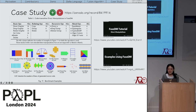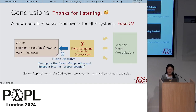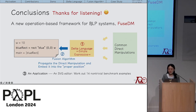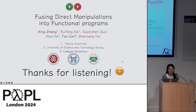To demonstrate effectiveness, 14 benchmark examples from Sketch & Sketch are implemented using the tool. A tutorial video and a detailed walkthrough of all 14 benchmarks are available in the artifact package. In summary, the three contributions are: a simple but expressive delta language, a fusion algorithm propagating direct manipulations to proper positions, and a prototype application with 14 non-trivial benchmark examples.